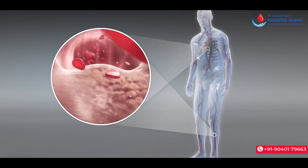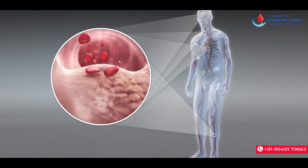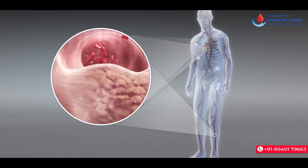The next complication after diabetic neuropathy is Diabetic Peripheral Vascular Disease. With uncontrolled A, B, C — blood sugar, blood pressure, blood cholesterol — the blood vessels get damaged. When the blood vessels are damaged along with nerve damage, the body develops a diabetic foot ulcer.